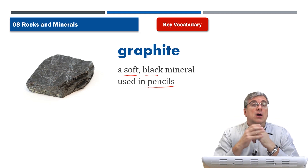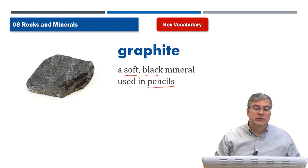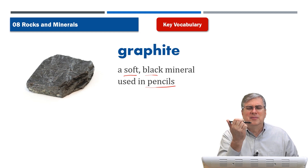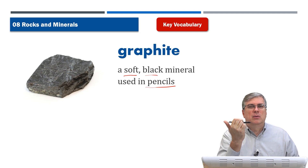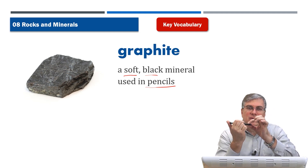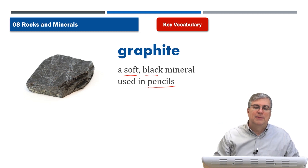Graphite is a very useful mineral for writing notes or messages. We use it in pencils, and also in what's called a mechanical pencil — where you have a thin piece of graphite inside a pencil-like machine, and you click a button that pushes the graphite out as you write.